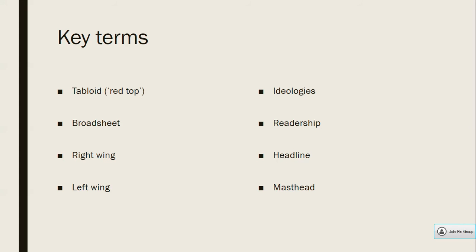A couple of key terms you should be using in your essays: tabloid newspapers are what we sometimes call red tops — the Sun is the one we're studying. They have very different news values to broadsheets like the Guardian. Instead of politics, world affairs, and economics, tabloids tend to be more gossipy, more sensational, with lots of entertainment and sport. They target a far more mainstream audience, so they have very different news agendas.